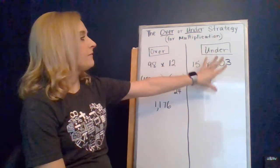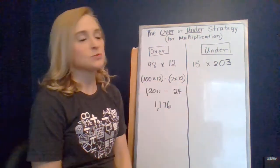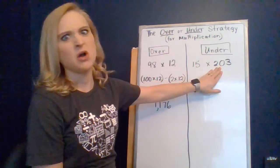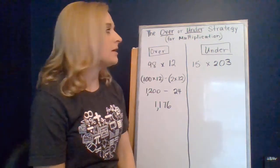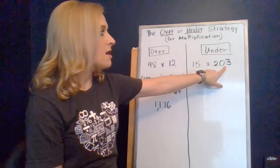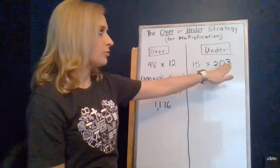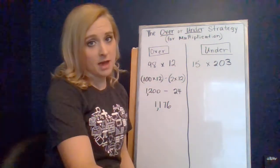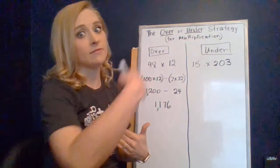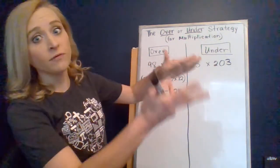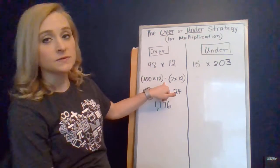Now we also have the under strategy. That's when you have a number that goes over a friendly number by a little bit. Like I see 203. 200 is a very friendly number. So if I take the three groups away, then that means I'm going to have to put them back in. So if I go under, then I'm going to have to add. Whereas over here, I went over, so then I had to remove some groups. So it's kind of the opposite in terms of thinking.